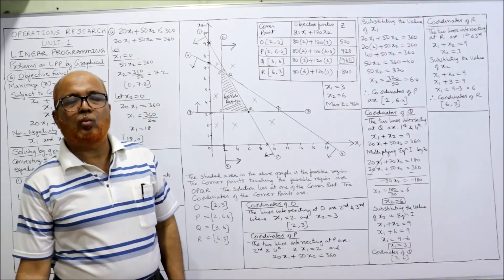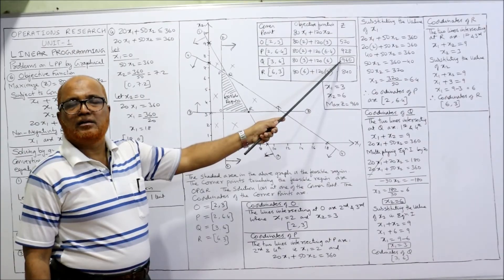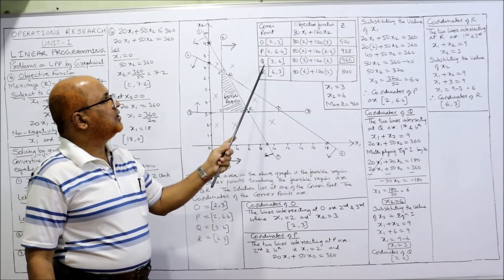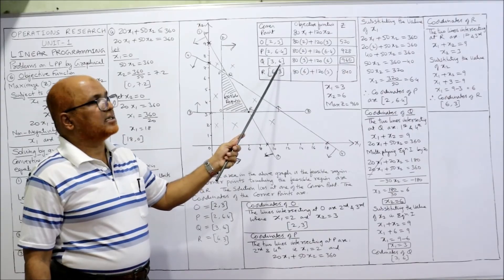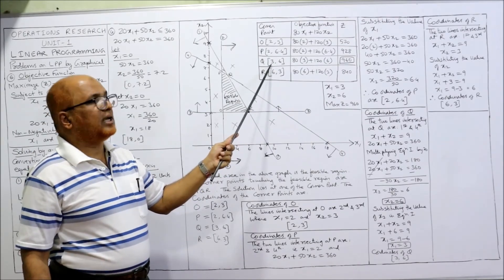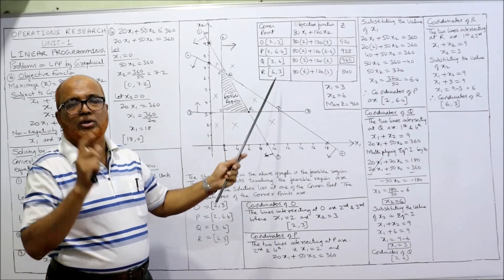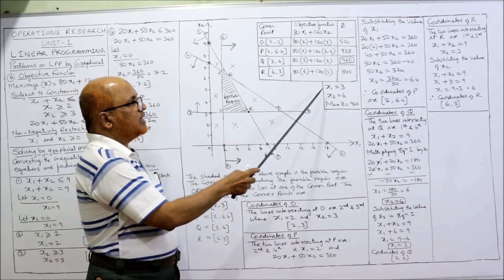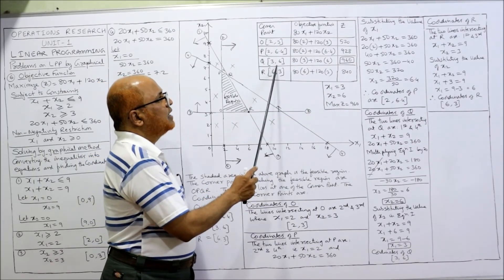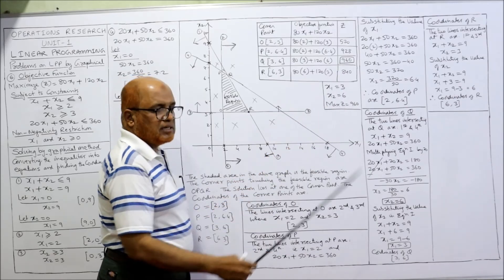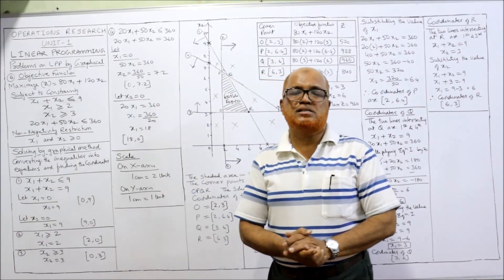The highest value of z is 960, occurring at corner point Q with coordinates (3, 6). So the final answer is x1 = 3, x2 = 6, and maximum z = 960. This is the end of problem number 6.